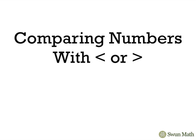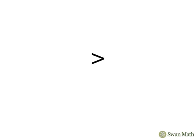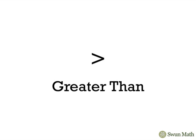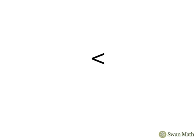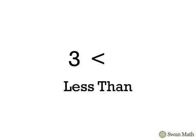In this video we'll be comparing numbers with less than or greater than. This is the greater than symbol. Three is greater than one. This is the less than symbol. Three is less than five.